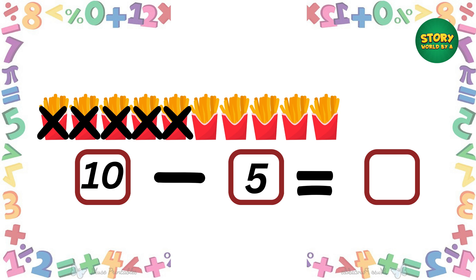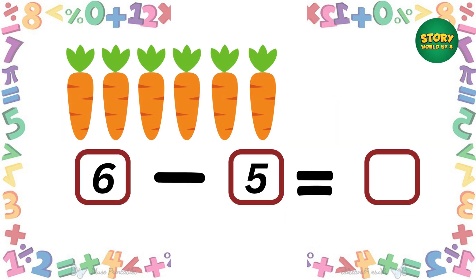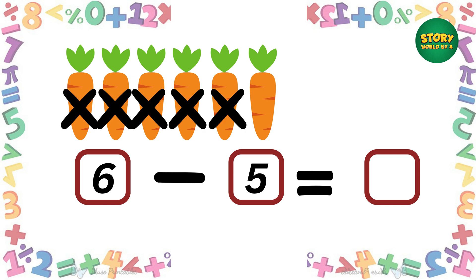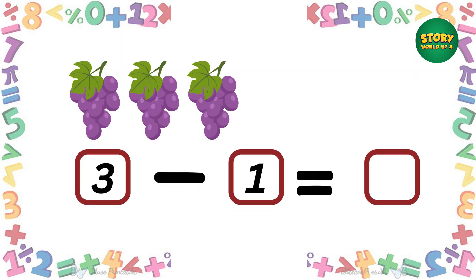If we have six carrots and we give five to a sister, how many are left? That's right, one! If we have three grapes and give one to a sister, how many are left? That's right, two grapes!